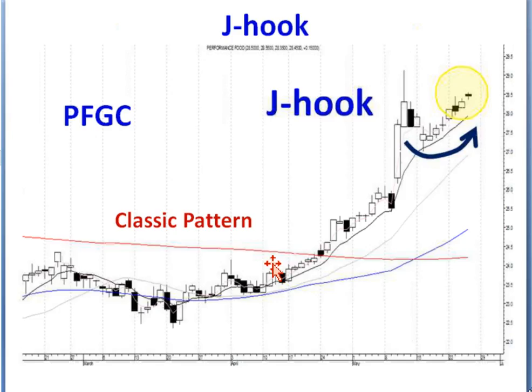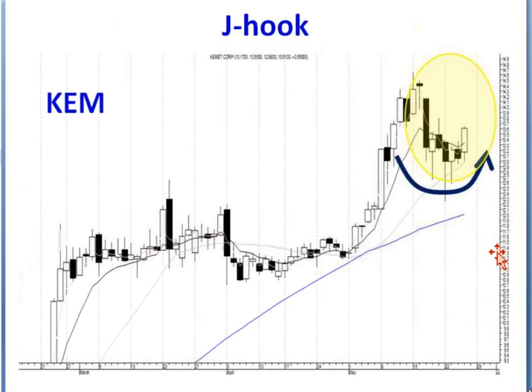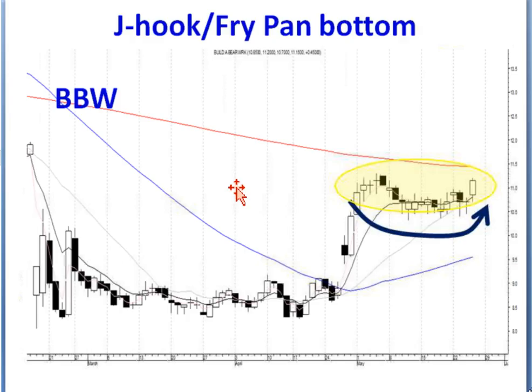MetaStock already has everything built in as far as the formulas, looking for the signals and patterns that we know are going to produce the higher profit setups. The J-hook pattern or a J-hook fry pan bottom is in Build-A-Bear. I look at Build-A-Bear and my first thought is, why would people be buying Build-A-Bear heading into the summer? The answer is I don't have to know why. This chart is telling us somebody's buying Build-A-Bear, and we want to participate in it.